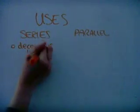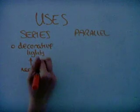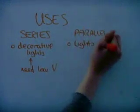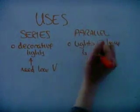Series circuits are used in decorative lights, which only need a low voltage. Shunts are also used to allow the circuit to flow even if one filament breaks.